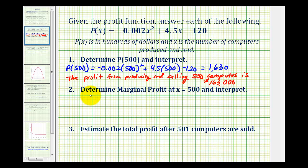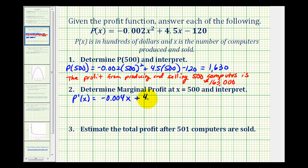Number two asks us to determine the marginal profit at x equals 500 and then interpret the results. The marginal profit function is just the derivative of the profit function. So p prime of x is going to be equal to negative 0.002 times the derivative of x squared, giving negative 0.004x, plus the derivative of 4.5x which is 4.5. The derivative of the constant 120 is zero. So here is our marginal profit function.